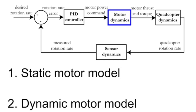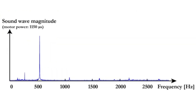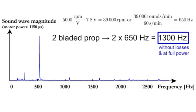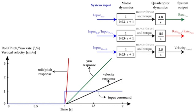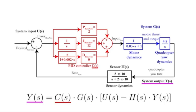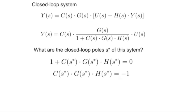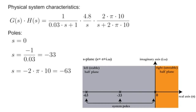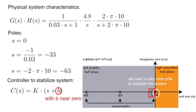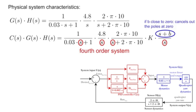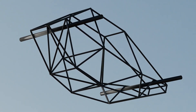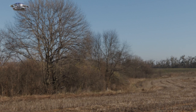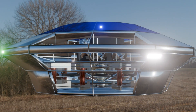Control laws adapt to airframe geometry, but the foundation remains the same: interpret feedback, compute adjustments, and command precision thrust. Your platform is modular — expand and customize it whether it's for speed, range, lift, or complexity. The core architecture scales with your imagination.